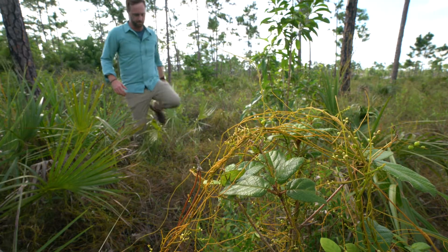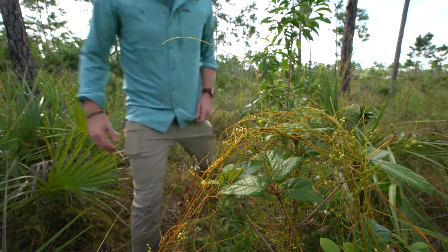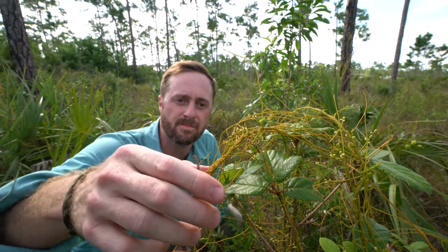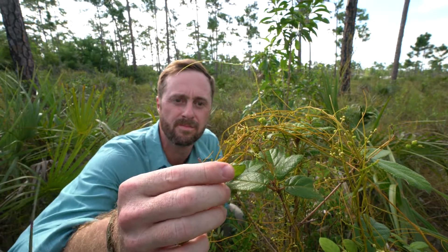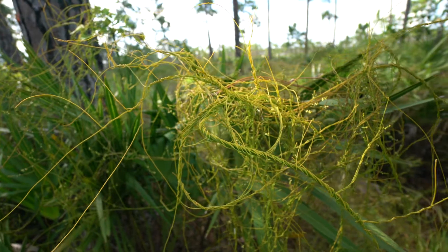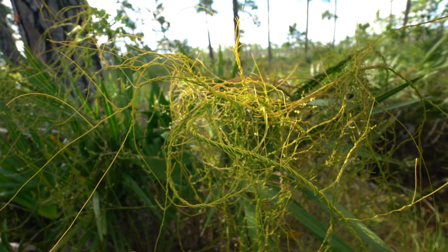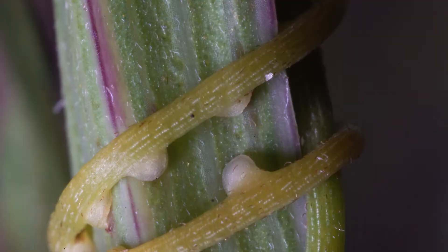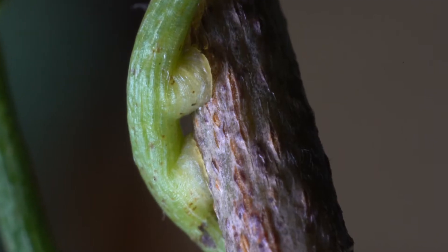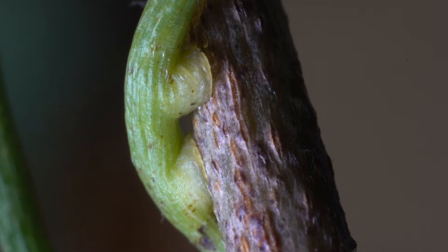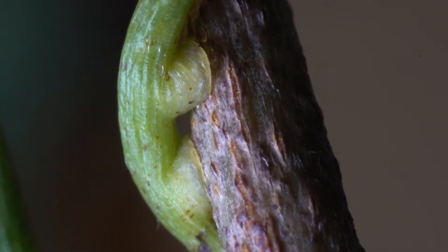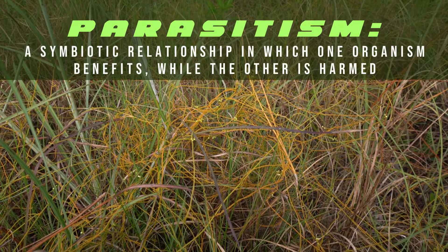The grasses of the Everglades are sometimes attacked by a parasitic plant called lovevine. The name is misleading. If we look closely, we see that this lovevine has little projections that penetrate the grass stems, sucking the life out of the plant. This is a great example of parasitism.